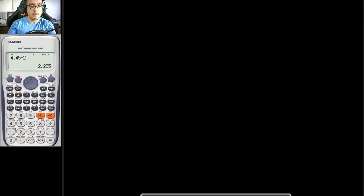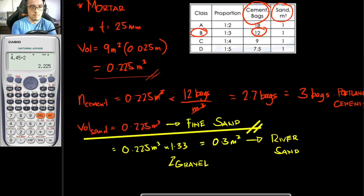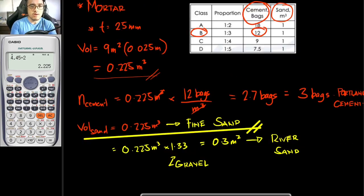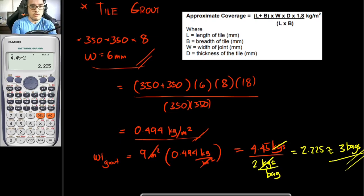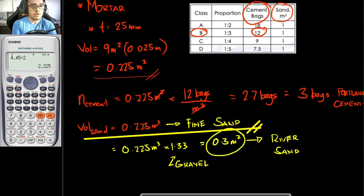For our summary of work number 1 — flooring: 78 pieces of 350 by 350 mm tiles, 3 bags of Portland cement, 0.225 cubic meters of fine sand or 0.3 cubic meters of river sand, and 3 bags of tile grout.